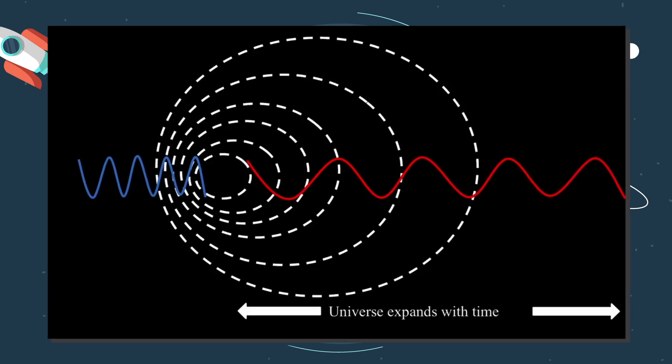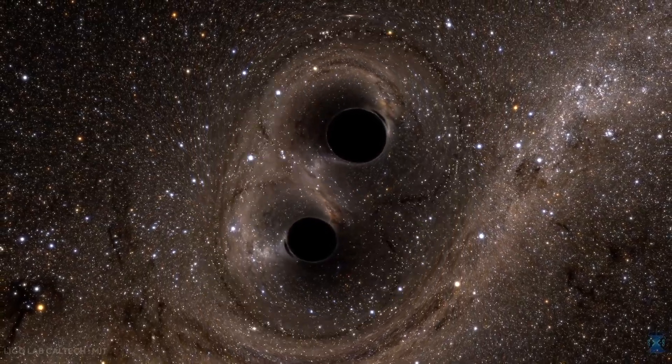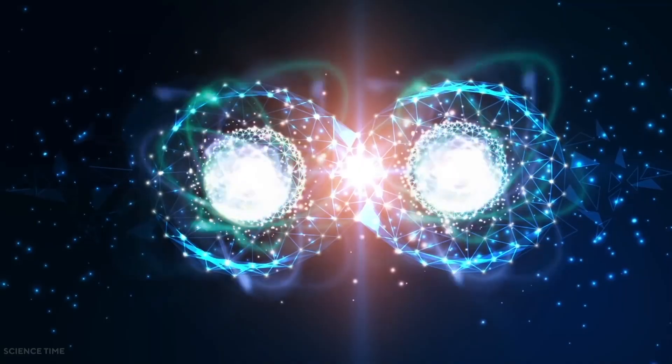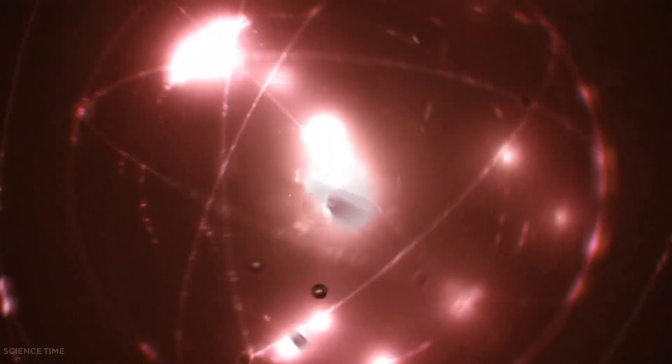Hawking and Hertog's theory of eternal inflation is based on string theory, which attempts to combine gravity, general relativity, and quantum physics, by saying that the smallest parts of the universe are tiny strings that vibrate.